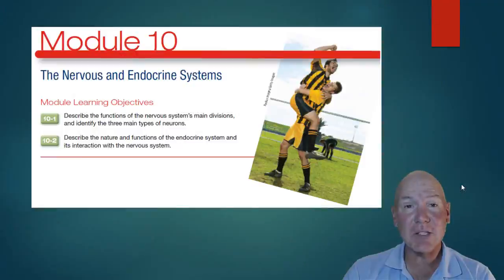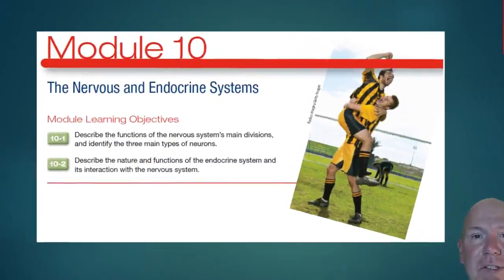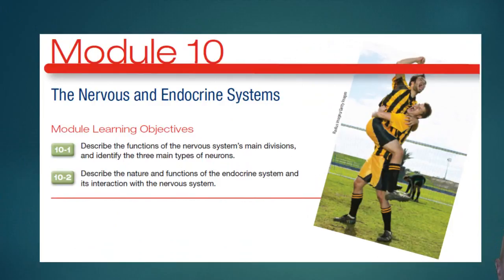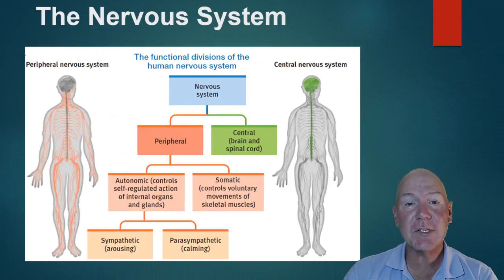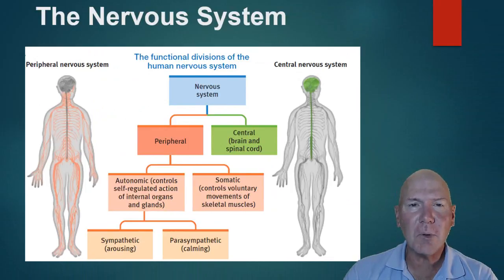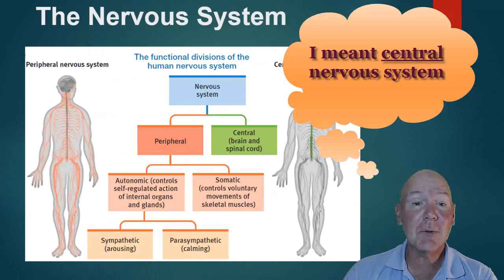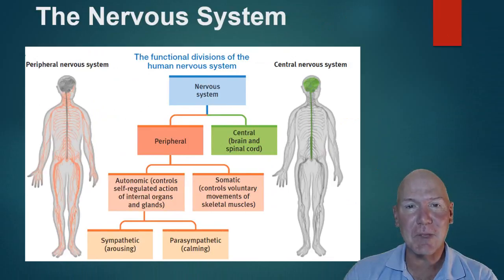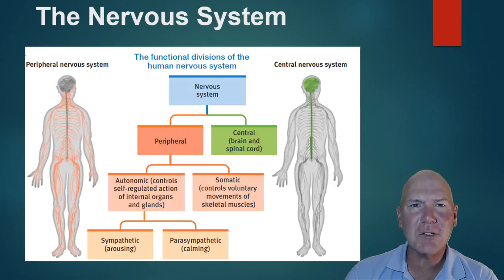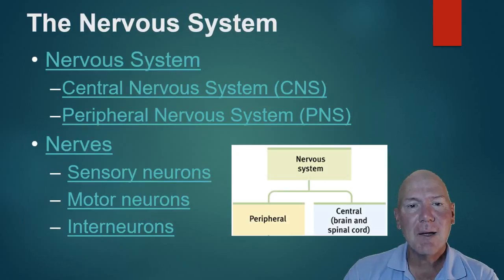Moving on to part two: biological basis of behavior, looking at the nervous and endocrine systems. Here are the learning objectives. The nervous system consists of two main parts. Your brain and spinal cord make up the central nervous system. Notice this chart is laid out in a hierarchy, so come back to it after we cover the parts. Your brain likes hierarchy, so it'll help you remember it.